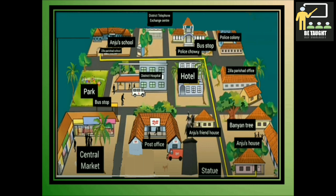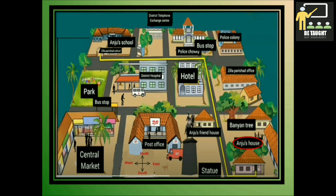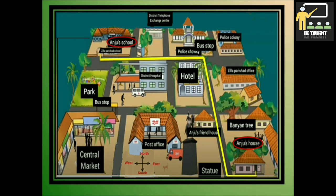This picture shows the area around Anju's house and school. Now we have to do this activity with the help of the picture. Find Anju's house in the picture. Here is Anju's house. From Anju's house, we will go straight, then take a left turn, and then we will go straight till the end and reach Anju's school.